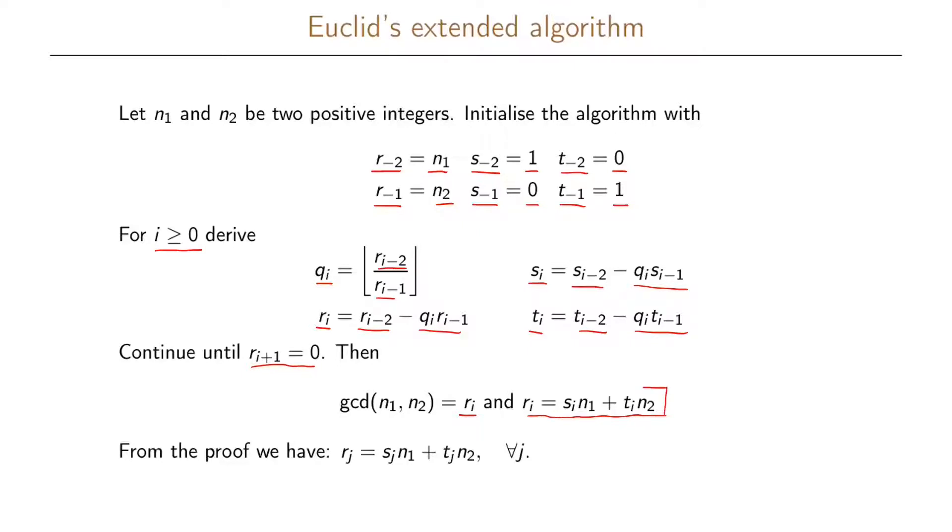So this is what we are after. This is what we are looking for. This is Bézout's identity. I'm not going to prove this in this video, but from the proof we actually see that we have a more general result. So for each step in this algorithm we will have that r_j equals s_j times n1 plus t_j times n2, and this will hold for all our j's.